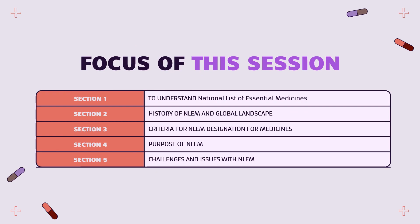First, let's understand the focus of this session. In the first section, we are going to understand what exactly essential medicines are and what the National List of Essential Medicines is. We will also look at the history of essential medicines and the global paradigm. Then we'll focus on the exact criteria for a medicine to be declared essential, its designation, the purpose of declaring such a list, and finally, the challenges and issues with declaring such a list and how it affects the healthcare of a common person.